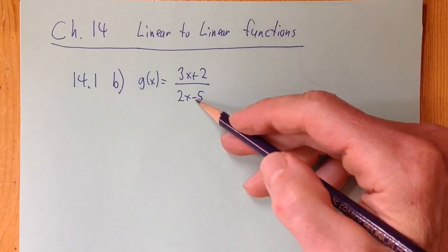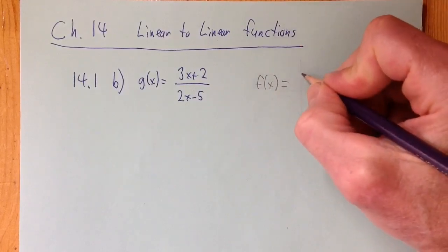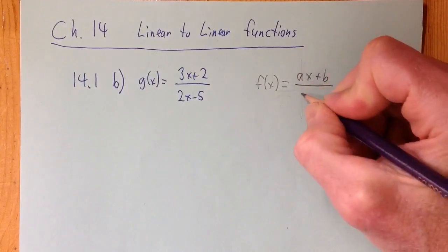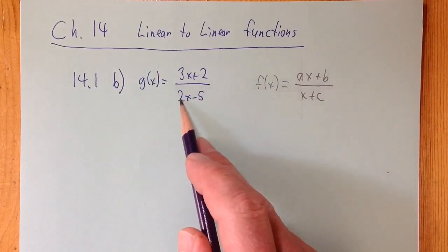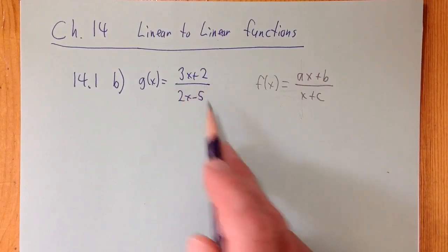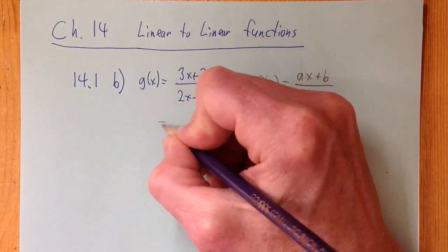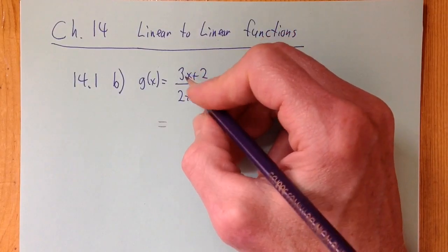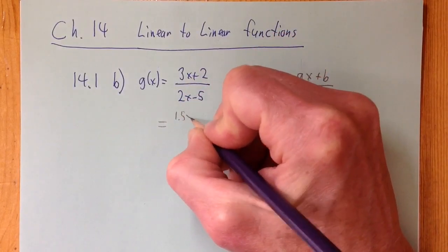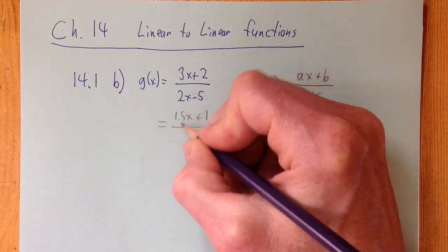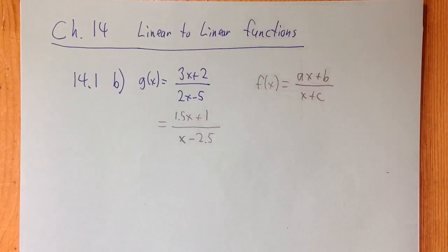So 14.1b looks like this. This whole chapter is about writing linear to linear functions, and they have it like this. You have ax plus b divided by x plus c with nothing in front of the x down here, because that makes it easier. So we have a 2 in front of it, so we need to get rid of that 2, which is easy. We just divide everything by 2. And then we can make it look like this, and then we can say some things about it. So that's the first step.